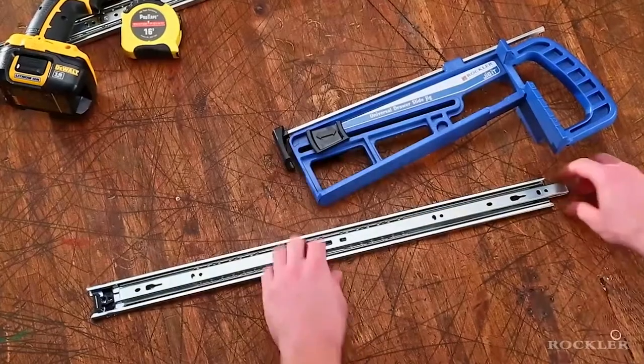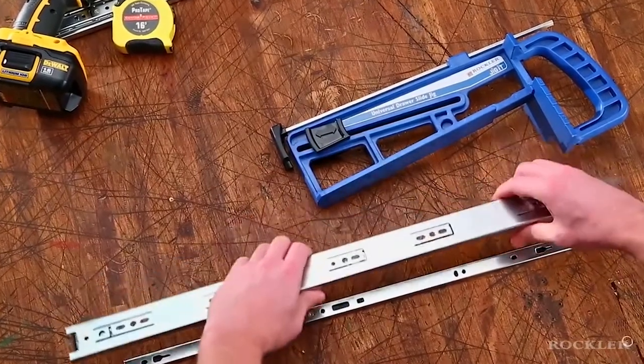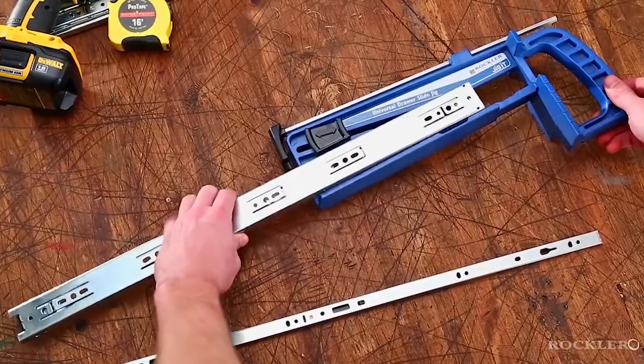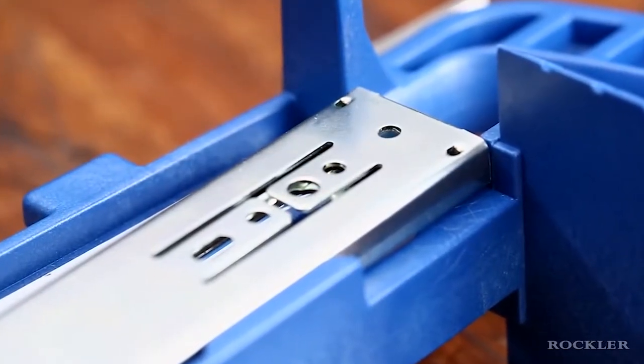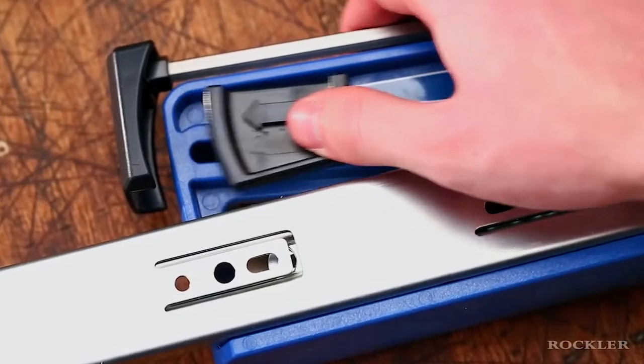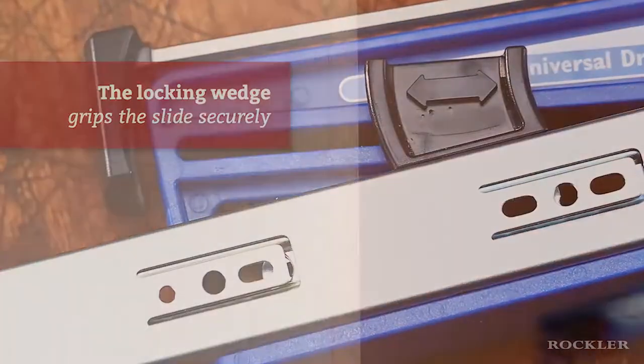Like all great jigs, it's easy to use. Just separate the two parts of the slide and put the cabinet track in the jig as it will be installed in the cabinet. An integral stop guarantees the right setback from the front of the cabinet and the innovative locking wedge grips the slide securely, so you don't have to worry about it shifting or tipping.